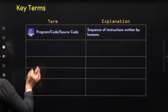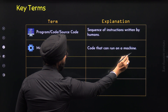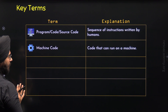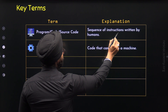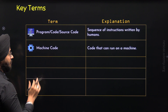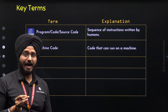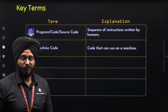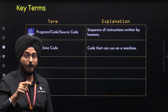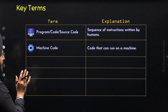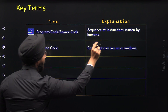Instructions are meant for a computer to execute. Now let's move to the second term, which is Machine Code. Machine Code is the code that can run on a machine. Source Code is the sequence of instructions written by us, whereas Machine Code is what the machine can understand. Machines cannot understand source code, so we need to translate source code to machine code in order to execute it.